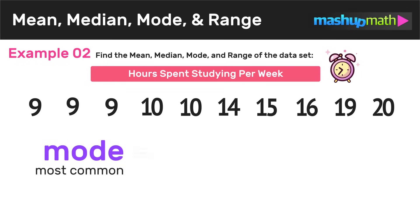So now we're ready to find the mode of the data set, or just the most common number. We should notice that in this data set there are two values that repeat: 9 and 10. However, the number 10 occurs twice in the data set, but the number nine occurs three times. And so therefore, we can conclude that the mode or most common value is nine.